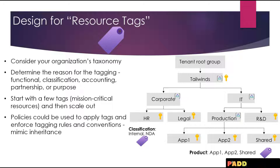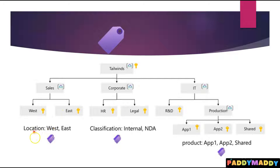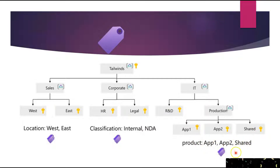Let's take the example of Tailwind Traders, which has a sales corporate ID. Following a similar hierarchy, you can apply tags for region — such as West or East — and classification tags such as 'NDA' for legal and 'Internal' for HR. You can also tag by application name, such as Application One or Application Two. Tagging is easy and very important for organizing resources properly.